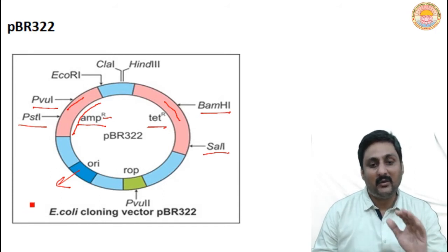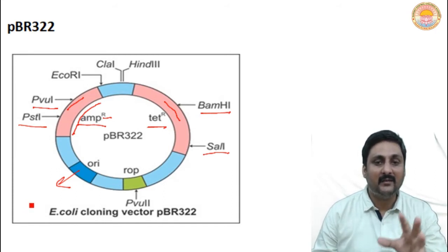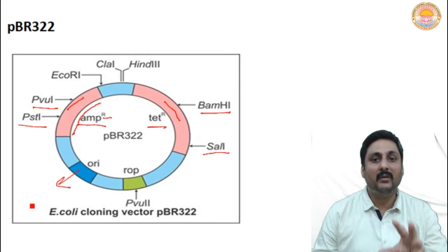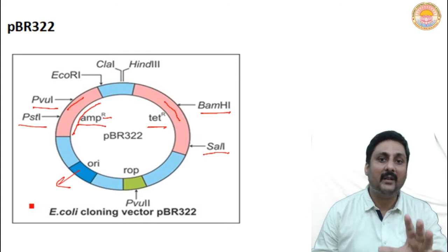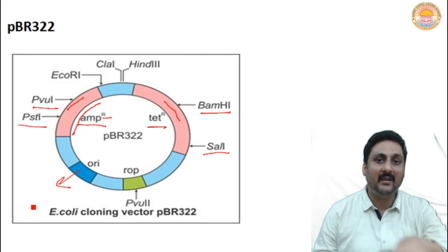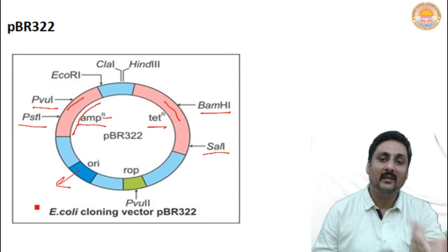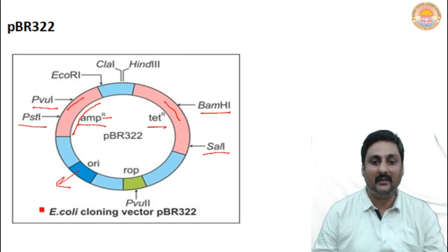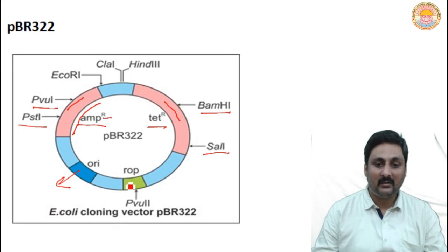The origin of replication is very necessary for the vector, because without it the vector cannot replicate. Moreover, the desired DNA which has been inserted inside that vector will also not be able to replicate.